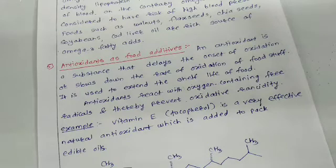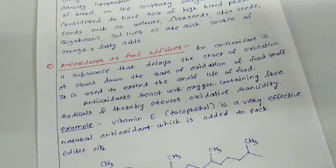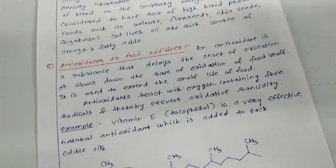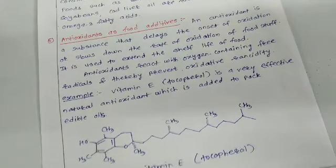It is used to extend the shelf life of food. Antioxidants react with oxygen-containing free radicals and thereby prevent oxidative rancidity. For example, vitamin E, the common name of which is tocopherol, is a very effective natural antioxidant. Which one is the natural antioxidant? Remember, vitamin E is the natural antioxidant whose common name is tocopherol, which is added to packed edible oils.